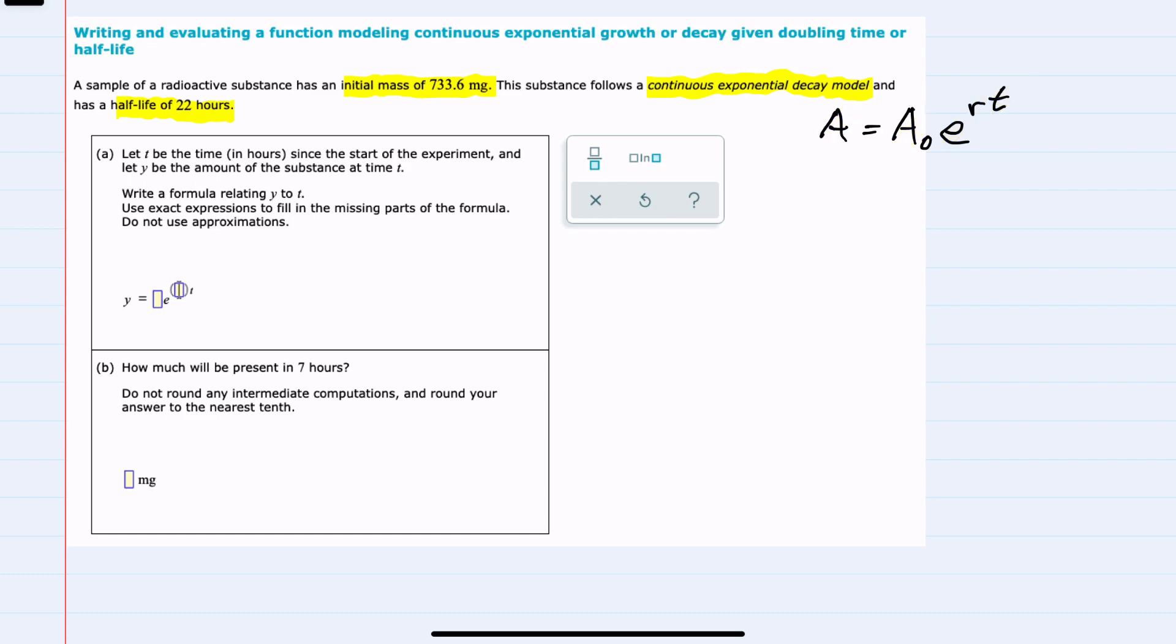For question a, we're asked to write the formula y equals blank e to the blank t. We'll need to know the initial value, which we have, but we'll also need the rate, and that's something we're going to need to calculate. To do so, I can use the fact that the half-life is 22 hours.